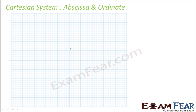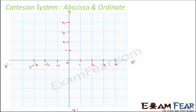Here are two lines: x-dash and x, y-dash and y, and O is the origin. Let's plot points: along the positive x-axis, one, two, three, four; along positive y, one, two, three, four; along negative x, minus one, minus two, minus three; and along negative y, minus one, minus two, minus three. This is my coordinate system.